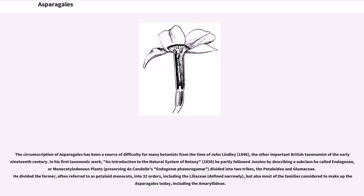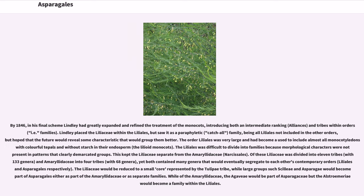In his first taxonomic work, An Introduction to the Natural System of Botany (1830), Lindley partly followed Jussieu by describing a subclass he called Endogenae, or monocotyledonous plants, divided into two tribes: the Petaloidea and Glumaceae. He divided the former, often referred to as petaloid monocots, into 32 orders, including the Liliaceae defined narrowly, but also most of the families considered to make up the Asparagales today. By 1846, Lindley had greatly expanded his treatment of the monocots, introducing both an intermediate ranking called alliances and tribes within orders. He placed the Liliaceae within the Liliales, but saw it as a paraphyletic catch-all family, being all Liliales not included in other orders.